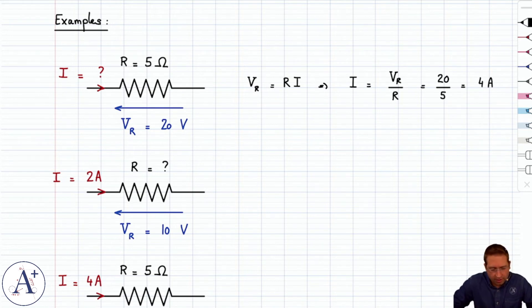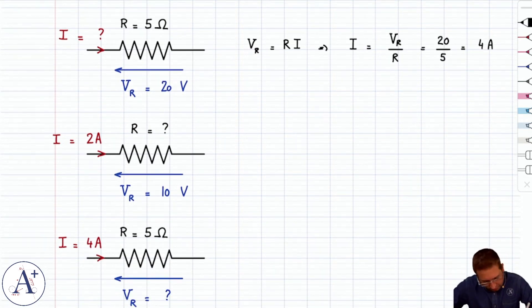Based on the same formula, R is V_R divided by I, which equals 10 divided by 2, and that's 5 ohms.